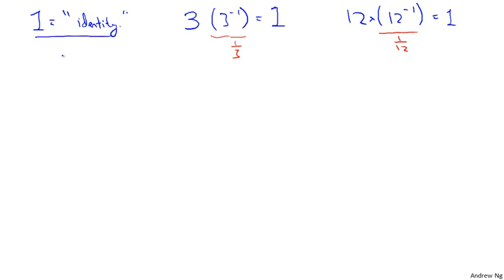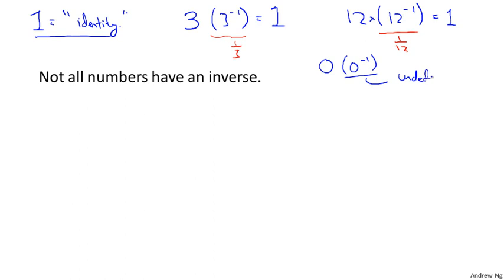Now, it turns out that in the space of real numbers, not everything has an inverse. For example, the number zero does not have an inverse, because zero inverse, so one over zero, that's undefined because one over zero is not well defined.